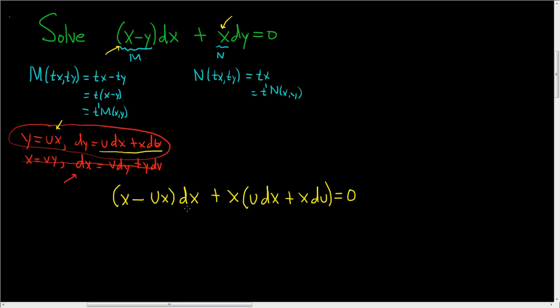Let's carefully distribute. So x times dx is simply x dx, and then minus ux dx, plus here we have x udx.